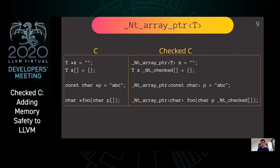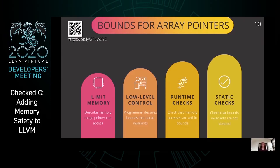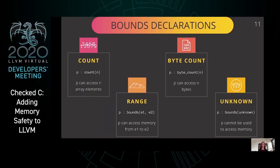To help ensure spatial memory safety, array pointers, including null-terminated array pointers, have bounds expressions that describe the range of memory that they can be used to access. Programmers can declare bounds for pointer typed variables and struct members. These bounds act as invariants that must be maintained throughout the program. The compiler uses the bounds to insert runtime checks for memory accesses and statically checks that the program does not violate bounds invariants. Programmers can use four different kinds of bounds expressions: count or byte count bounds, range bounds, and unknown bounds.